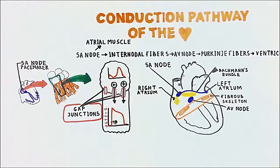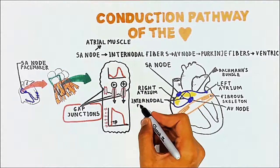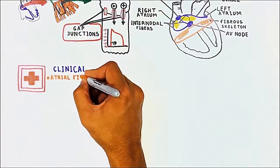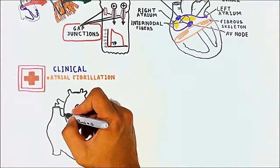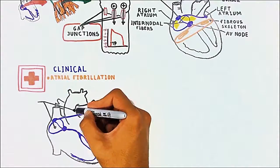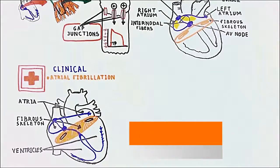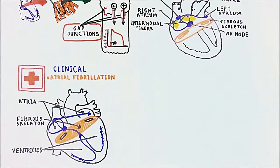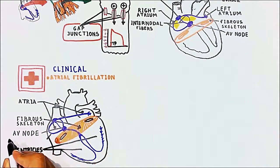The AV node receives electrical impulses mainly through the internodal fibers. It is very important to note that atrial fibrillation, which is characterized by rapid and irregular beating of the atria, can never degrade into ventricular fibrillation. This is because the fibrous skeleton of the heart does not conduct electricity from the atria to the ventricles. The only electrical conduit from the atria to the ventricles is the AV node, which receives electrical impulses from the SA node via internodal fibers.